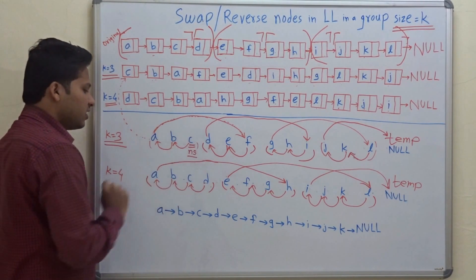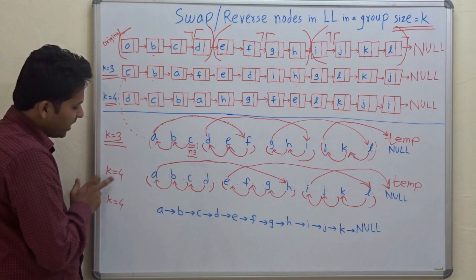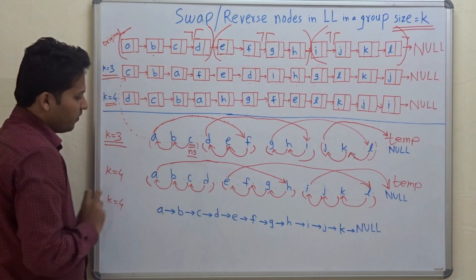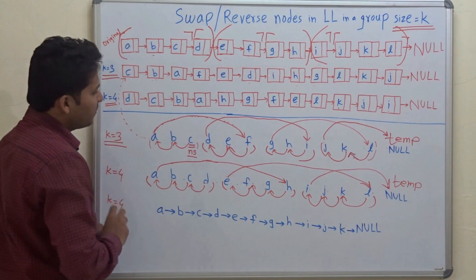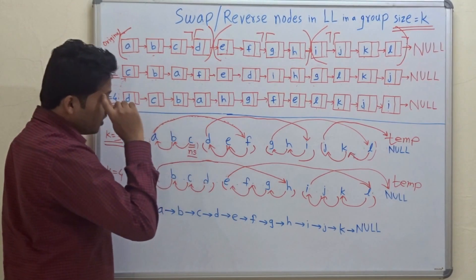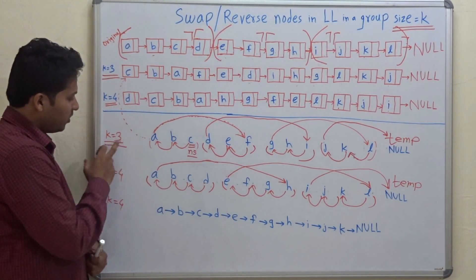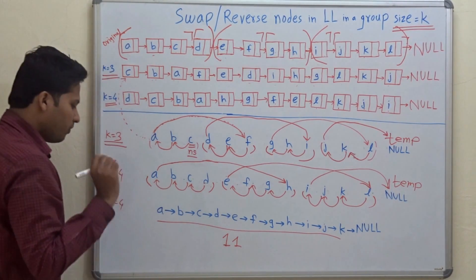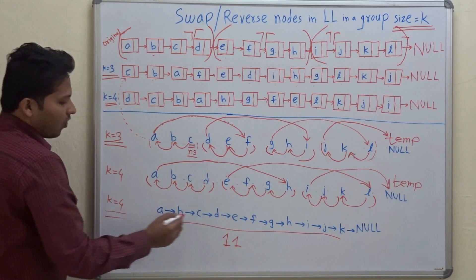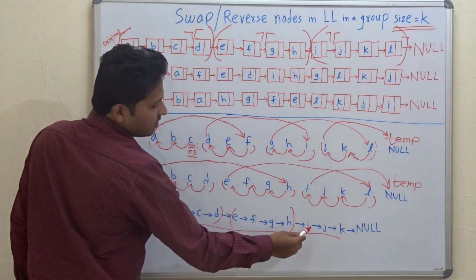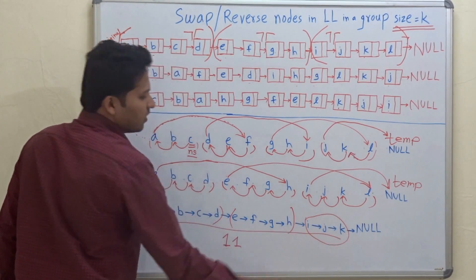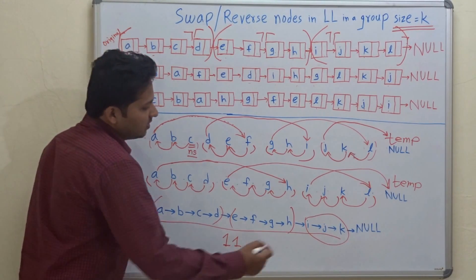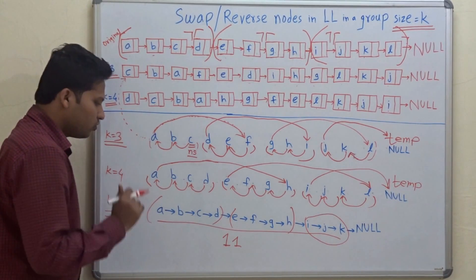Observe one thing: the number of elements are 12 in this linked list and k is equal to 3 and 4, and they are dividing 12 — 12 is a multiple of 3 and 4. But if there are 11 elements in this linked list and k is equal to 4, only 2 full groups can be formed and the last group will have only 3 elements, which is less than k. In this case we have to write all the 3 elements as they are — we do not reverse the last group.